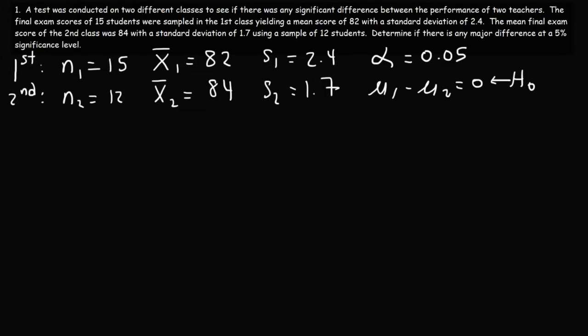The next thing we need to determine is what type of distribution to use — a t distribution or a normal distribution. If the sample size is large, we use a normal distribution; if the sample size is small, we use a t distribution. 30 is the threshold. Since both sample sizes are less than 30 — one is 15 and the other is 12 — we want to use the t distribution.